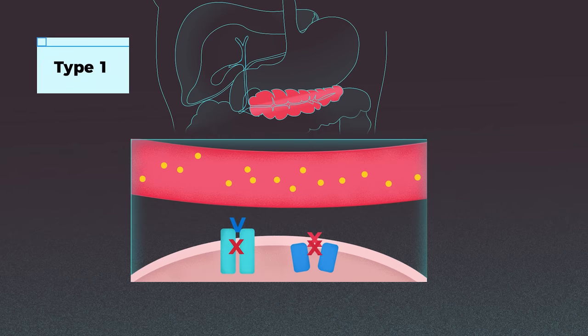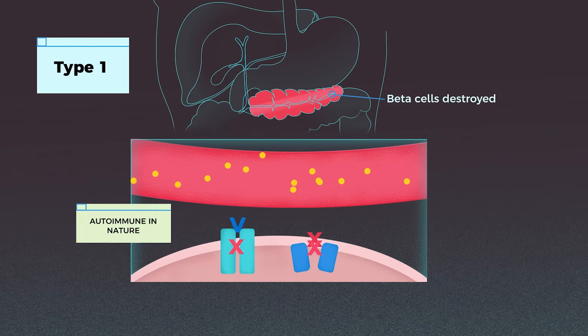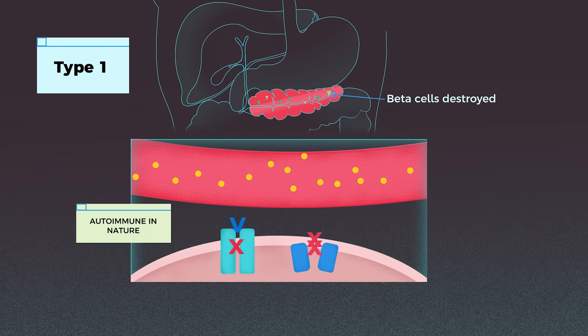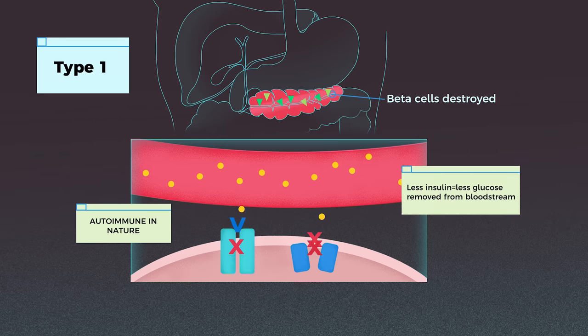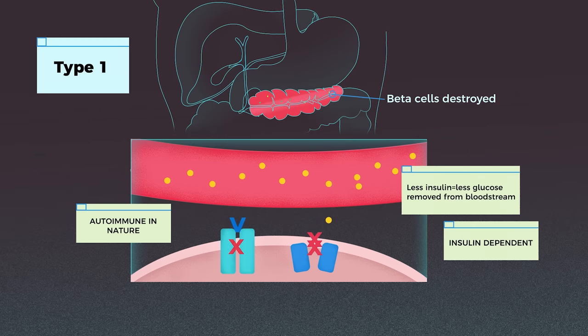Now let's talk about the types of diabetes. Type 1 diabetes is characterized by the destruction of the beta cells in the pancreas — that is the cell that creates insulin. So basically, insulin has a really hard time being created by those with type 1 diabetes. This is often due to genetics and autoimmune in nature. So this is the type of diabetes that usually needs those insulin shots — when you see it in the movies, they have to shoot themselves with some insulin.